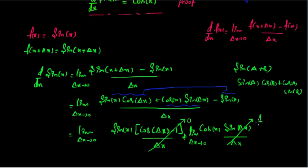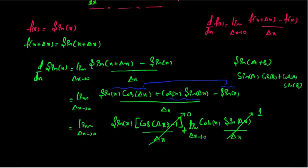So, this comes in the concept of limit. By using this, we can write the resultant. We have already applied the limit, so we do not need to rewrite it. We will have sin x times 0, which is 0, plus cos x times 1. So, the resultant is cos of x.